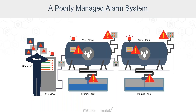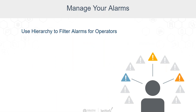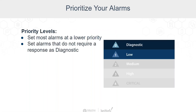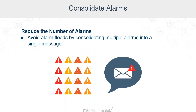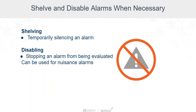A poorly managed alarm system creates problems for users. Alarm flooding means multiple alarms fire in a short period. Stale alarms stay in the alarm state continuously for hours on end. Chattering alarms go from active to clear multiple times per minute — users are going to silence these and stop paying attention. It's really important to manage alarms well. Filter them so you're only showing alarms to users in certain groups or when they've navigated to certain areas. Watch your priorities — create alarms with a low priority by default, and only the most important alarms should be high or critical priority. You can reduce your alarm count by consolidating messages into a single message, and you can shelve an alarm to temporarily silence it or disable alarms for equipment that is down for maintenance.